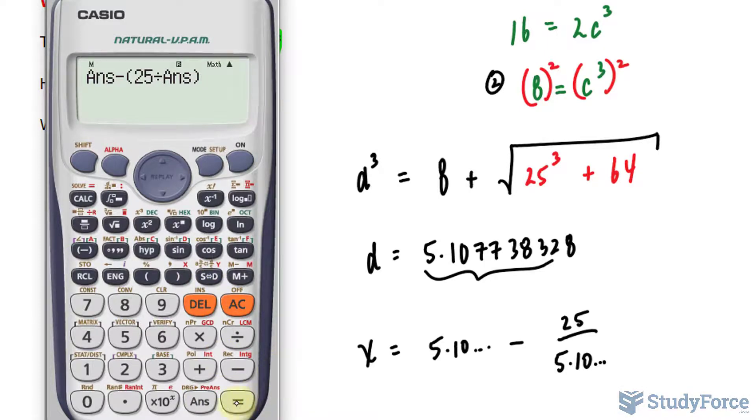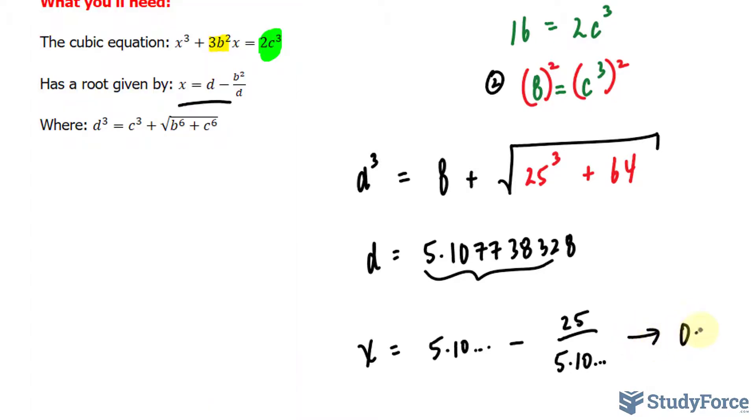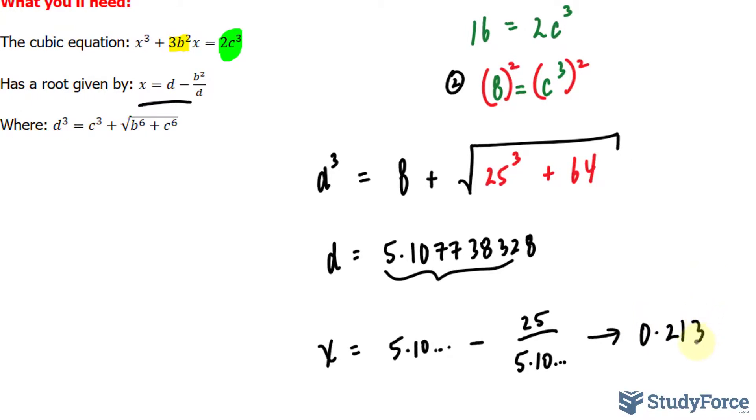So I'll write down 5.1077 minus 25 divided by the same output of 5.1077. And after calculating, you should end up with 0.2132.